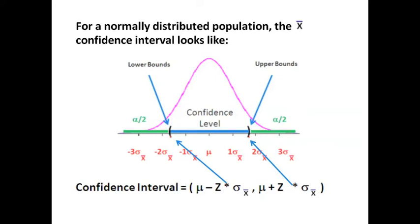For a normally distributed population, the x̄ confidence interval might look something like this. You have it in blue, you have error, and then we have a formula to calculate it.